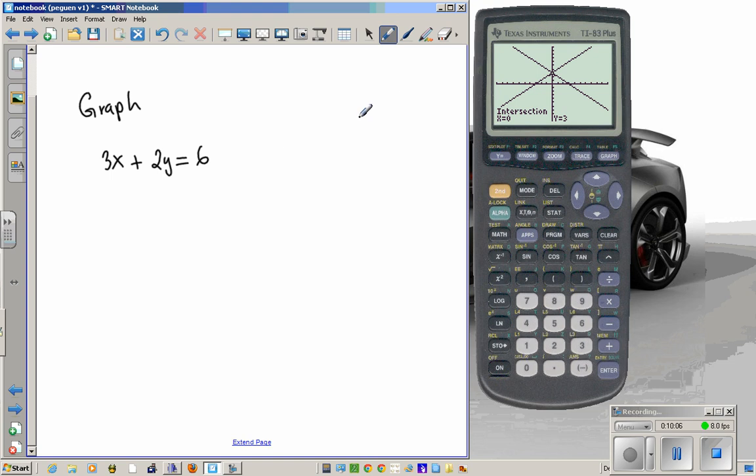So in order to put this in the form that this calculator can handle, we must apply our knowledge of algebra to manipulate this equation to be in terms of just Y, explicitly solved in Y. So we subtract 3X from both sides. Then we have 2Y equals negative 3X plus 6. Divide everything by 2. And then we have Y equals negative 3/2 X plus 3. That looks much better now. Something that's graphable with this calculator.